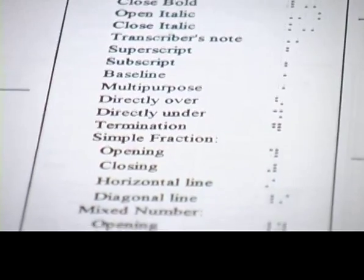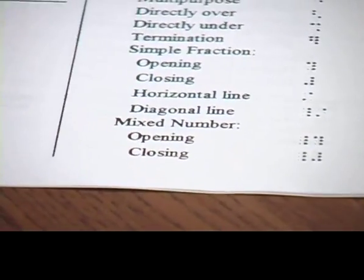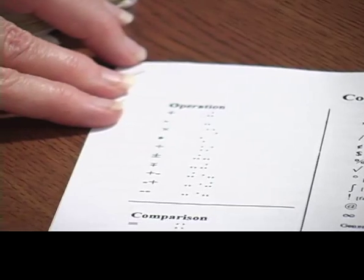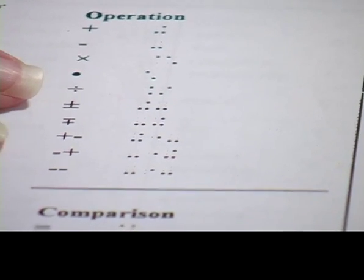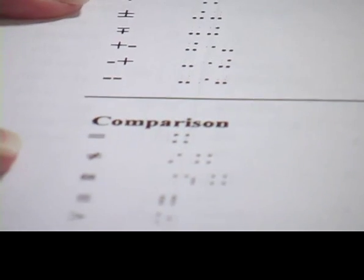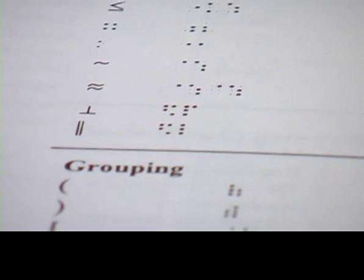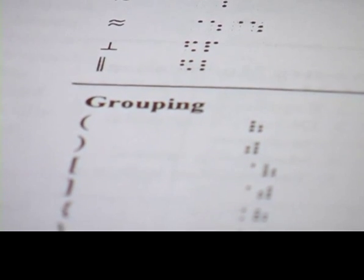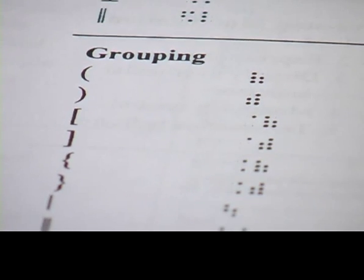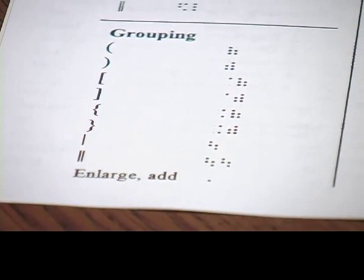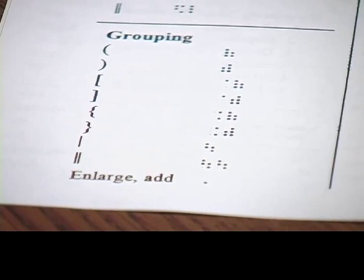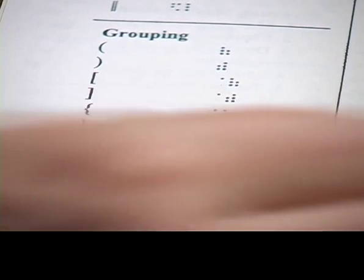Moving over to the left, we're going to see a few simpler signs. We've got the operations: plus, minus, cross times, dot, times, and so forth. Lots of different print symbols, and then we have the Braille and Symbraille on the right. So lots and lots of Nemeth symbols are contained on one print page.